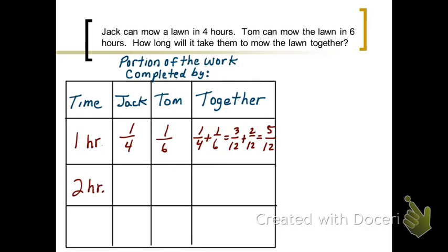Let's look at two hours. So after two hours, what fraction of the work has Jack done? Well that would be two-fourths of the work. Each hour he's doing one-fourth of the work. And similarly for Tom, it would be two-sixths. So if we want to know what fraction of the work they've done working together, we just add those. We get ten-twelfths, which reduces to five-sixths.